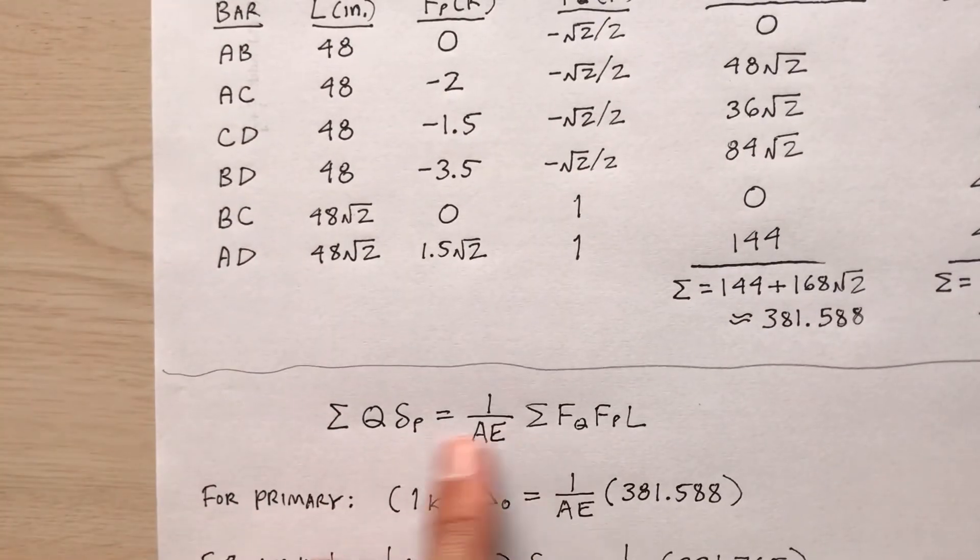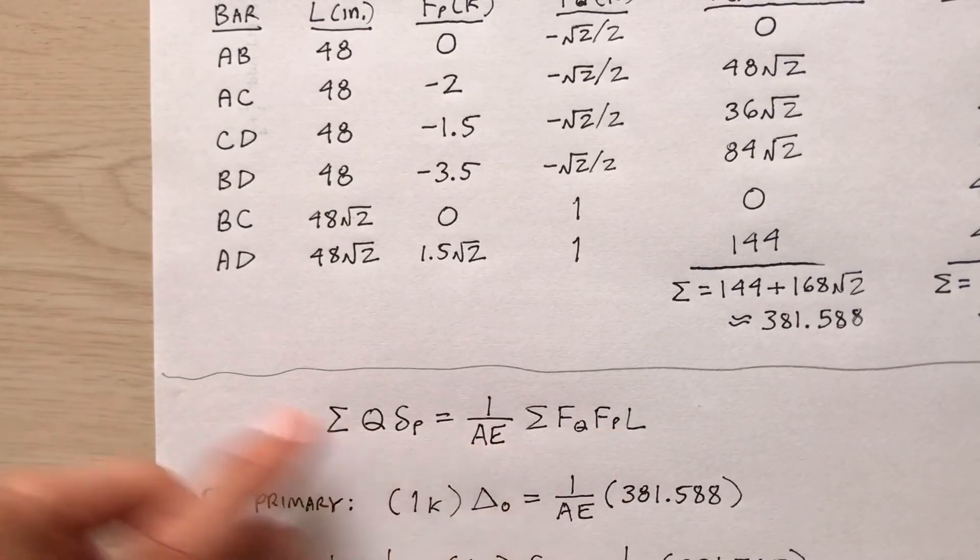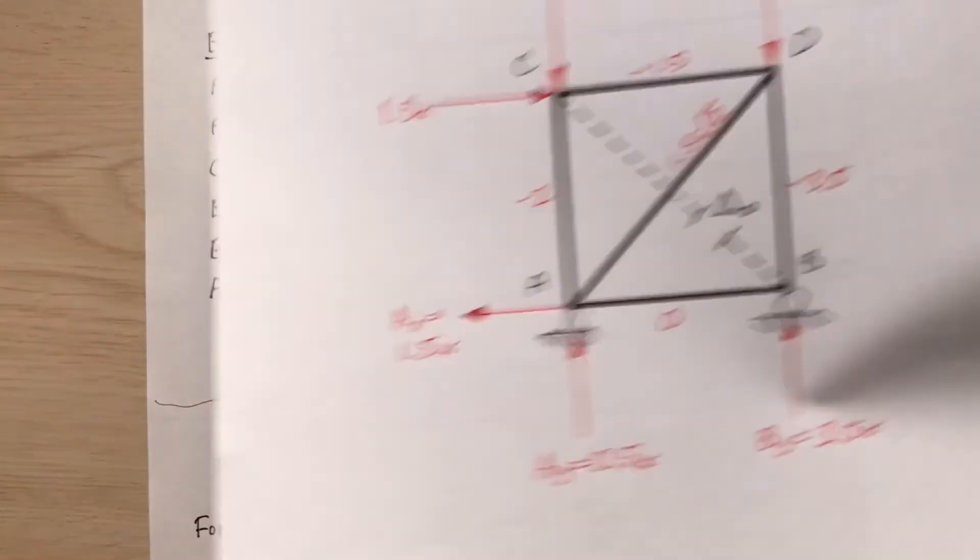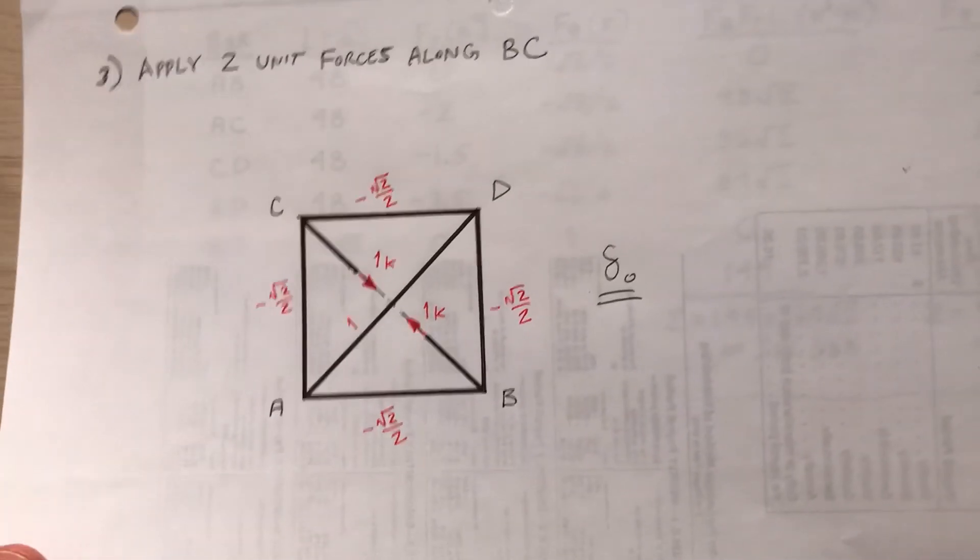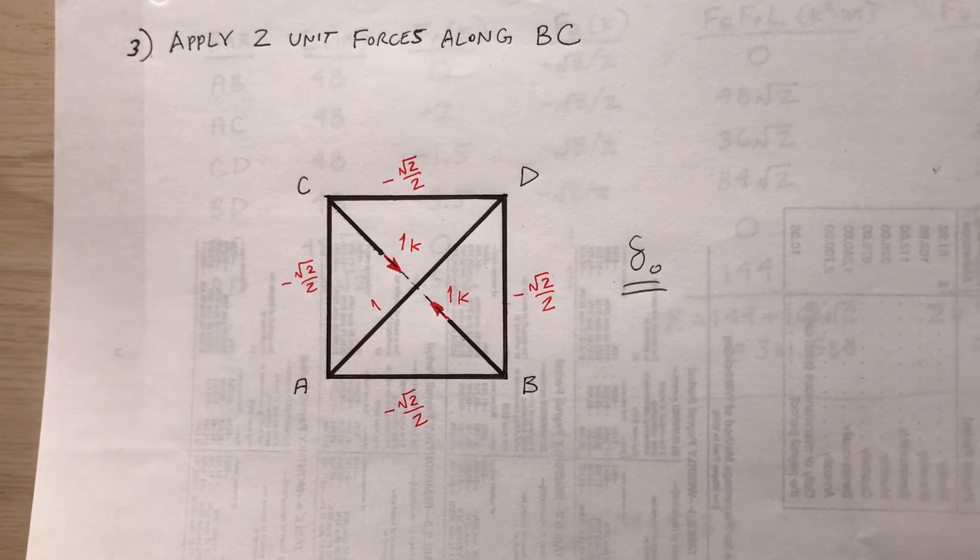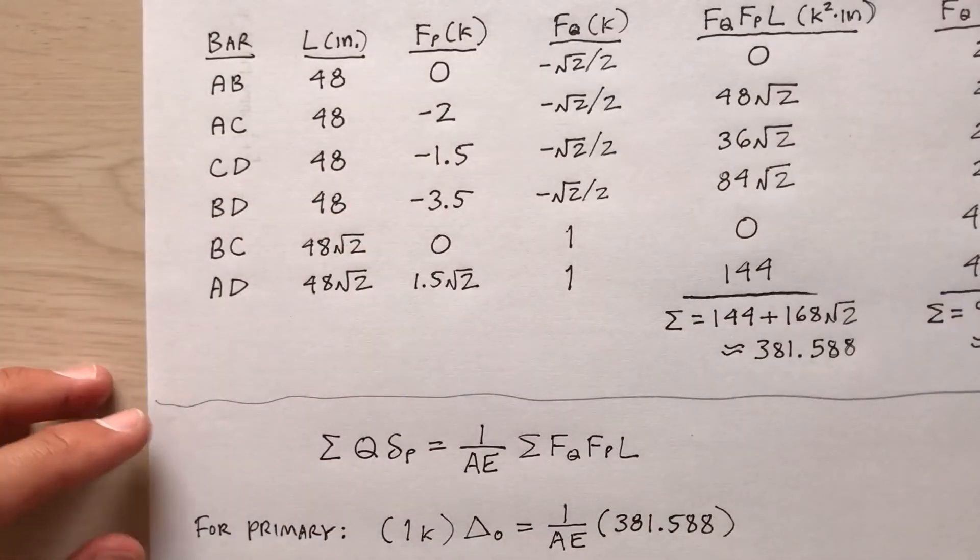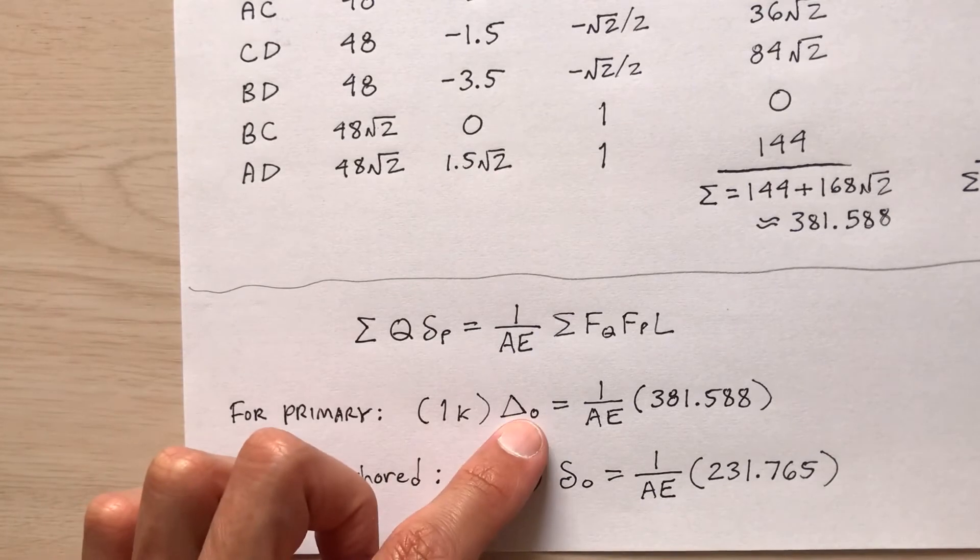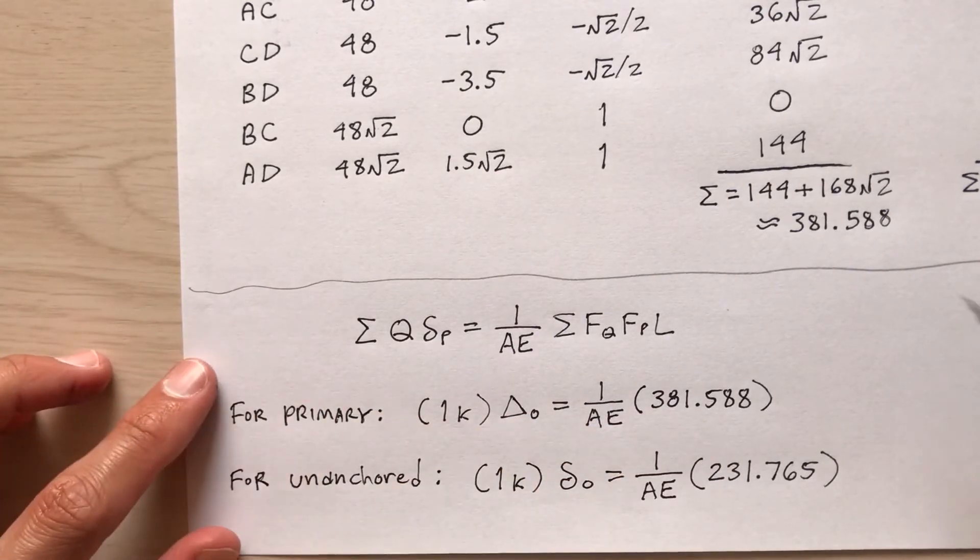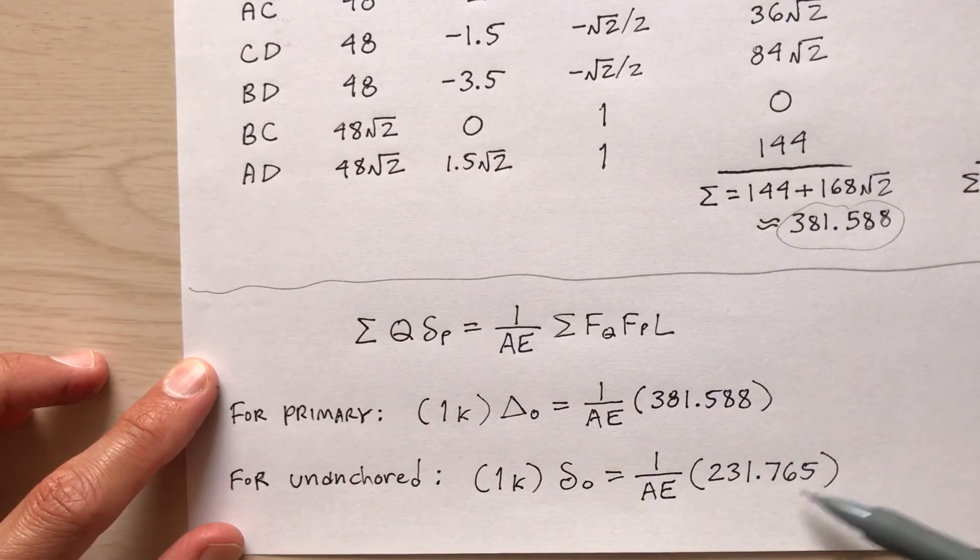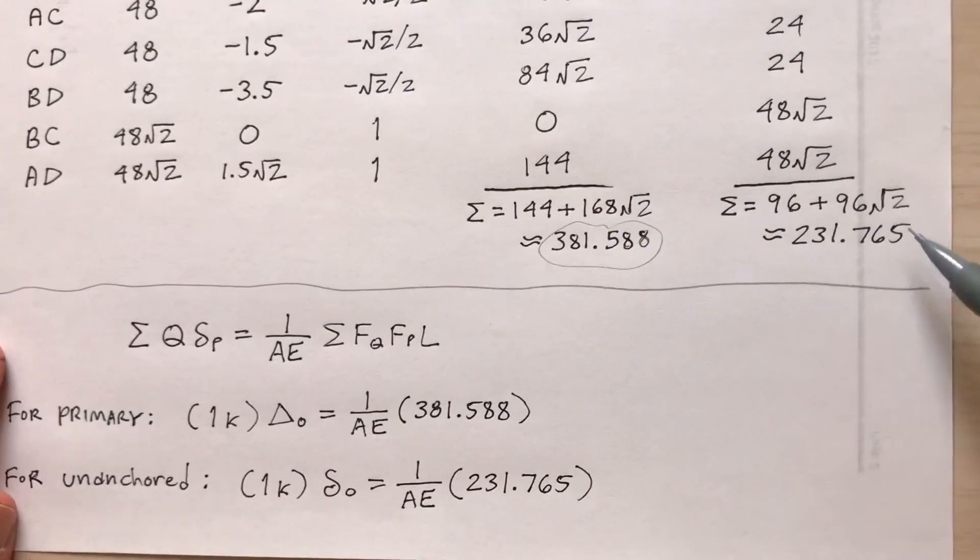What does this have to do with anything? Remember this standard equation? AE is constant, so I pulled that out of the summation. So remember there's two deflections I'm trying to find: delta sub zero for the primary truss, and then little delta sub zero for the unanchored truss. I call it unanchored because there's no external reaction supporting this thing, so it's like it's floating free in space. So for the primary truss, put together the equation. One kip load, one kip times delta sub zero, one over AE, 381.588. That's this number. And then for the unanchored truss, that would be my unit force truss. One kip times little delta sub zero, one over AE times 231.765. That's this number here.